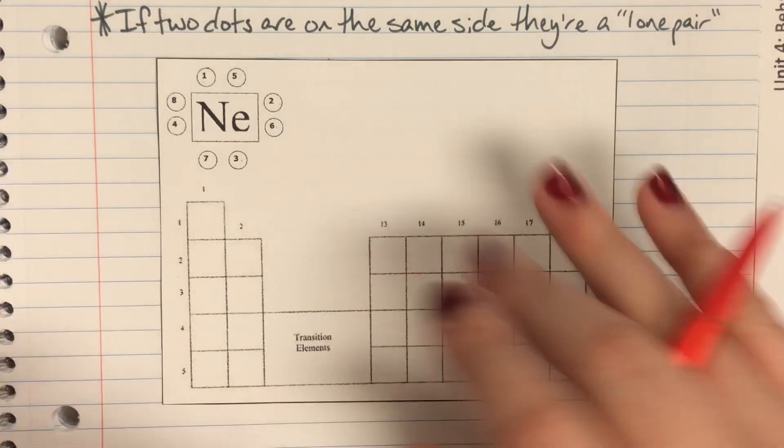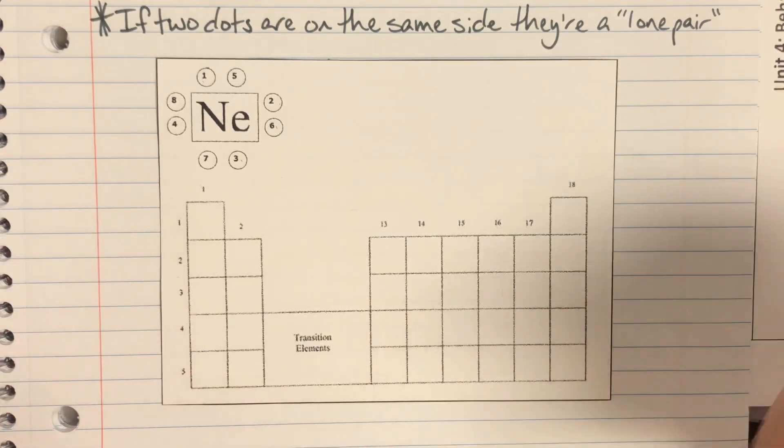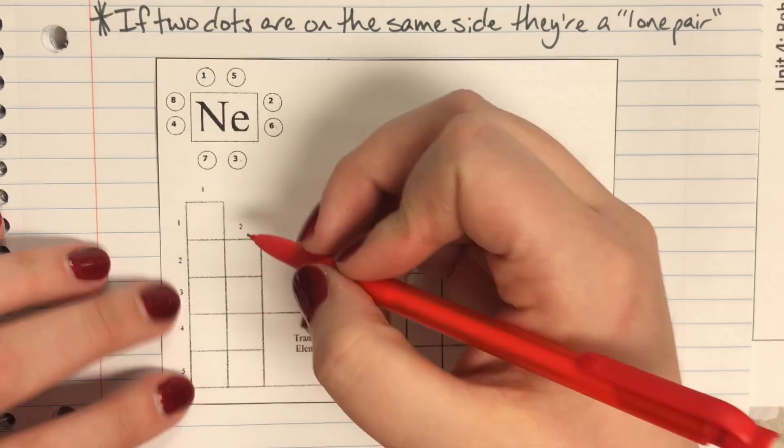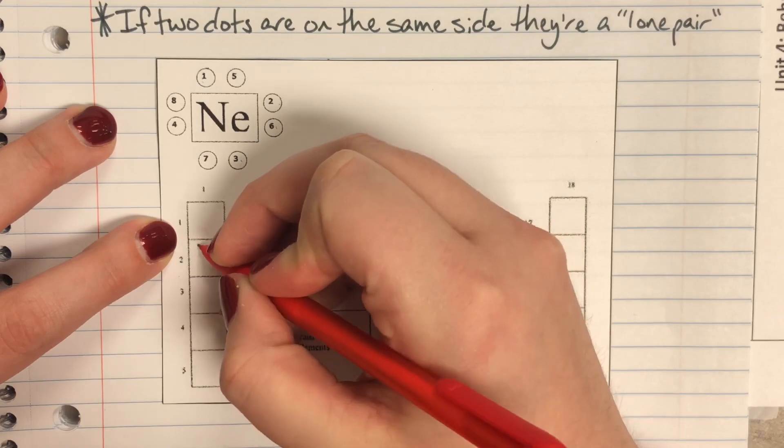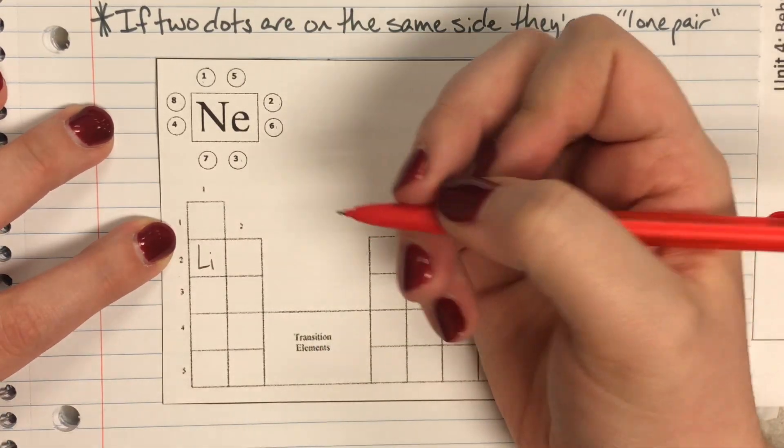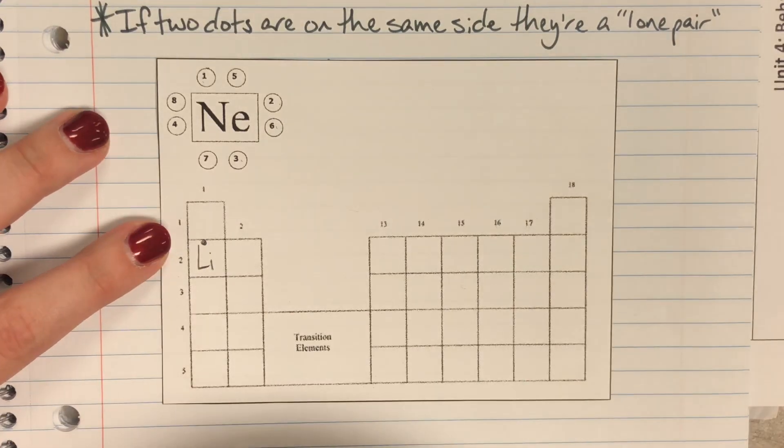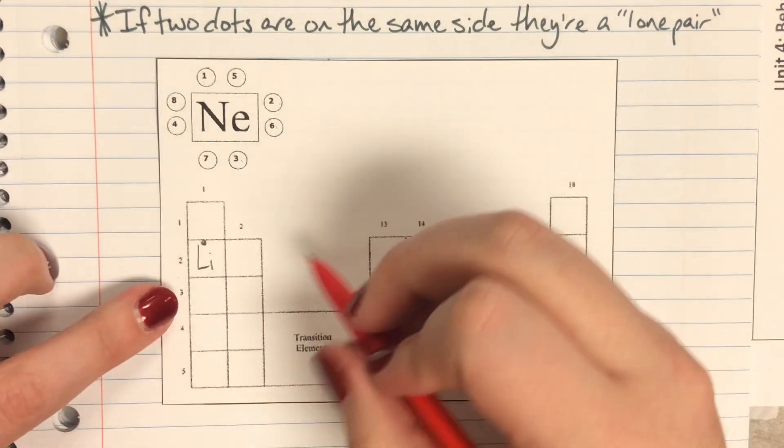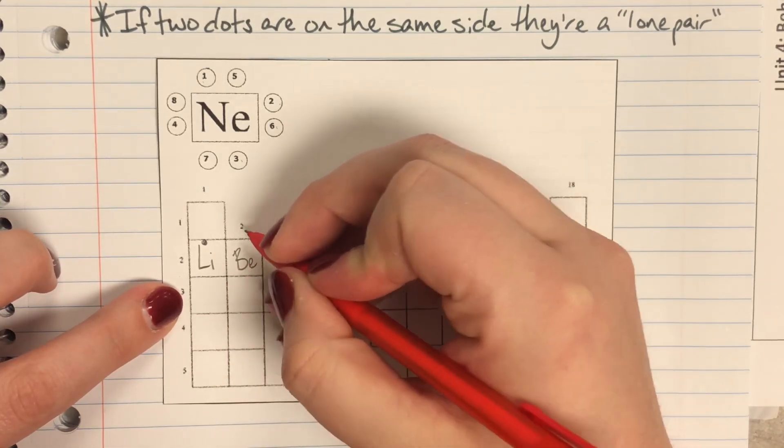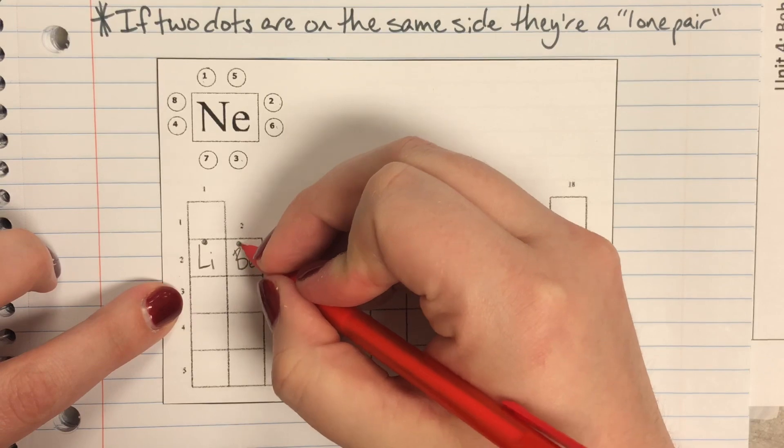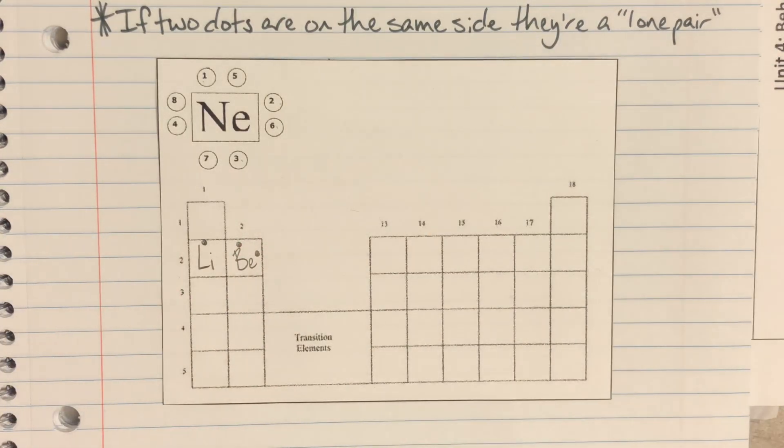Now we'll go ahead and we'll do one element from each of my columns here just so that we can see how that would look. So my first element I'm going to draw is just going to be lithium. Lithium is in column one so that means I'm going to have one dot above lithium. Next I will draw beryllium. Beryllium is in column two so that means I need one, two dots for beryllium.